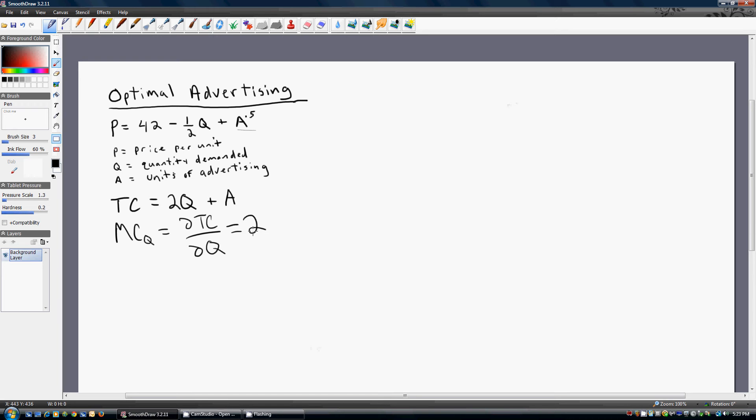Every time it produces one more unit of output, marginal total cost rises by $2. The next marginal cost we want is the marginal cost of advertising, given by the partial derivative of total cost with respect to A, advertising.